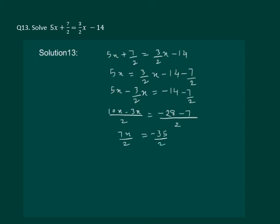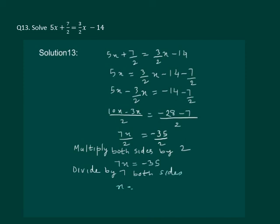But we have to find the value of x. So let us multiply both sides by 2. We get 7x equal to minus 35. Now let us divide both sides by 7. We get x is equal to minus 35 by 7.